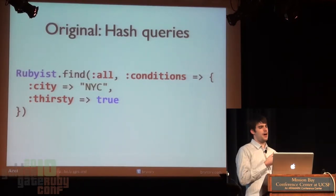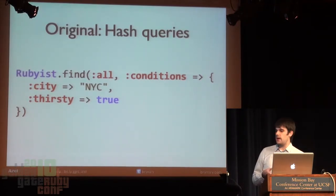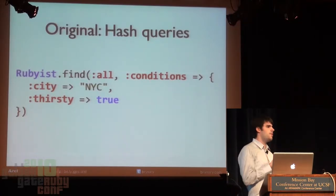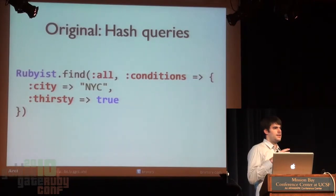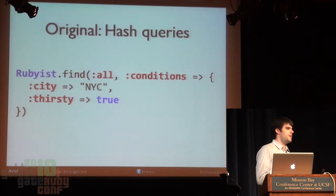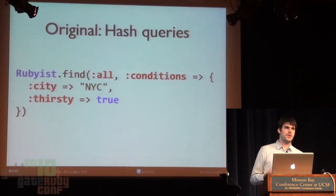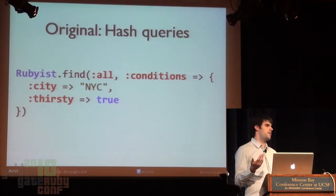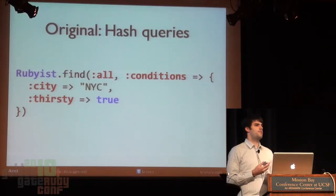Going back in time, originally there were hash queries — a real syntax where you do a find_all and then pass a hash. Everything you need in the query must be represented as keys on this hash, with conditions being one of the most important. Conditions can be a hash for equality lookups, but as soon as you need to do something more sophisticated — for example, looking for an age greater than 18 — the hash doesn't work. There's no way to represent that concept in a standard Ruby hash.